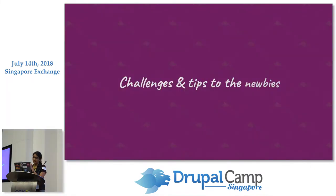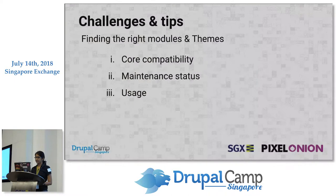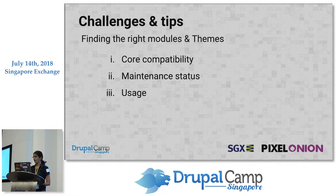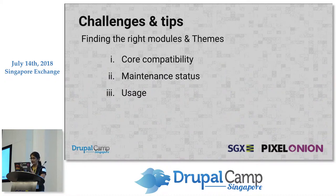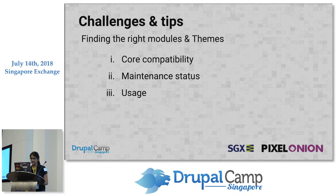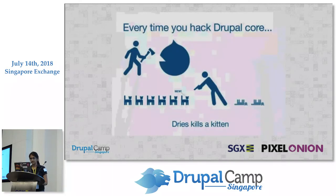Many newcomers face challenges. Initially when I started coding in Drupal, I really didn't know how to choose the right modules and themes. There are plenty of modules available, so to choose the right one: first look at code compatibility — the module should be compatible with your version of Drupal core. Then check maintenance status — the module should be actively maintained. Look for reviews as well. And don't ever try to hack the Drupal core code — if you do, it's really hard to maintain.